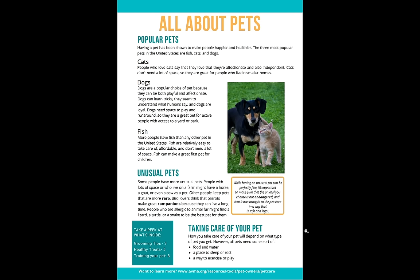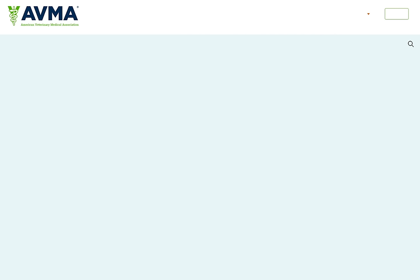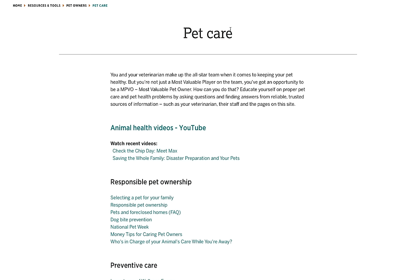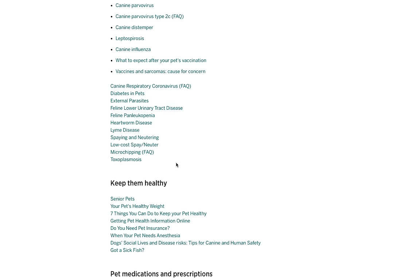Now down here at the very bottom of the page it says 'Want to learn more?' with the URL www.avma.org/resources/tools/pet-owners/pet-care. When I move my cursor over it, you can see the cursor changes to a pointy finger, and that means it's a hyperlink — it's going to take us to a website. And here we are on the website of the American Veterinary Medical Association, a website operated by animal doctors. You can see that this page, too, is organized under the title of Pet Care, with subheadings like responsible pet ownership, preventive care, and keep them healthy.